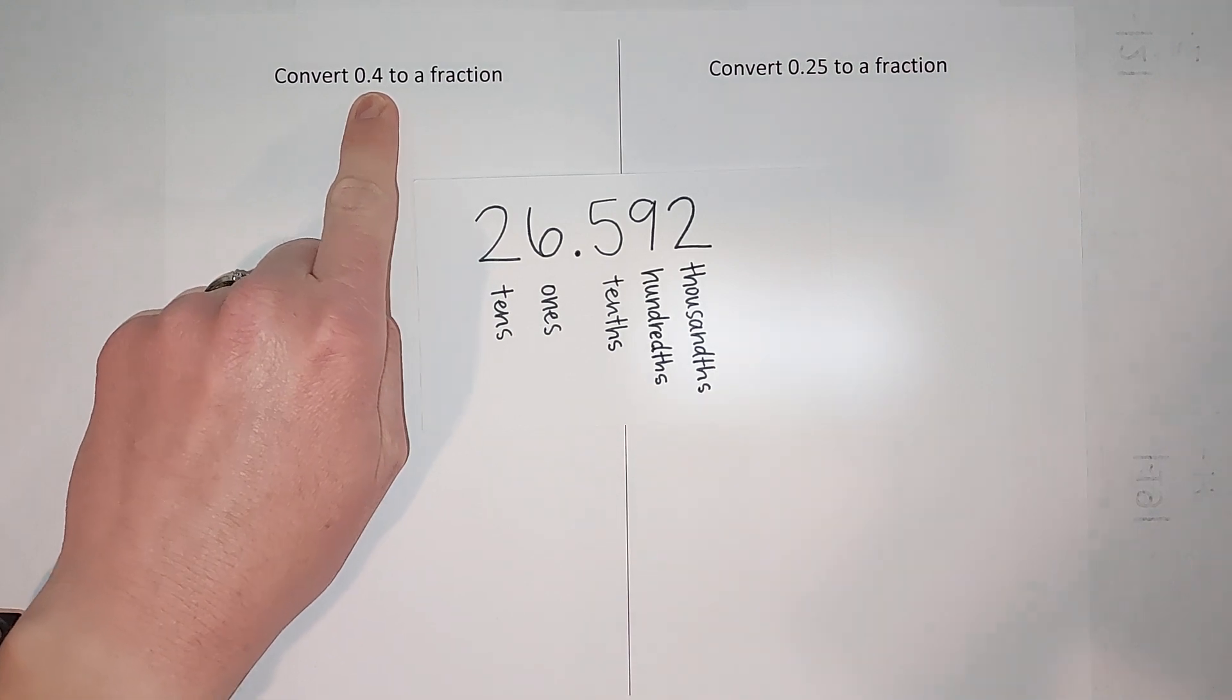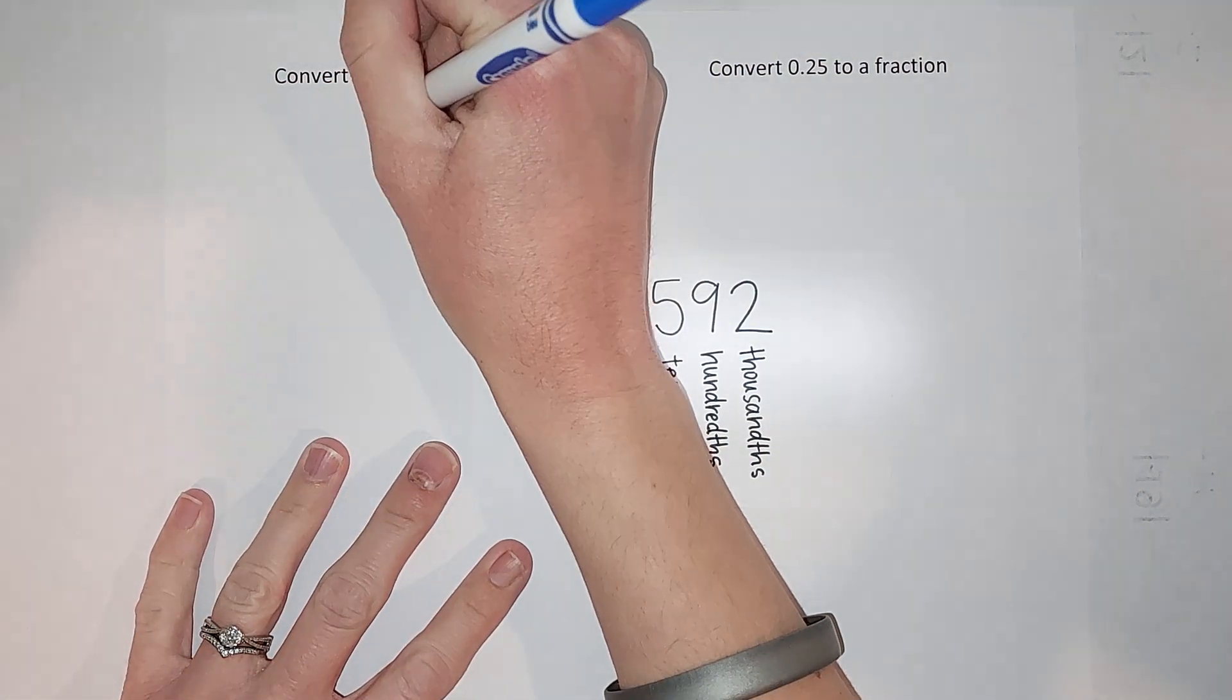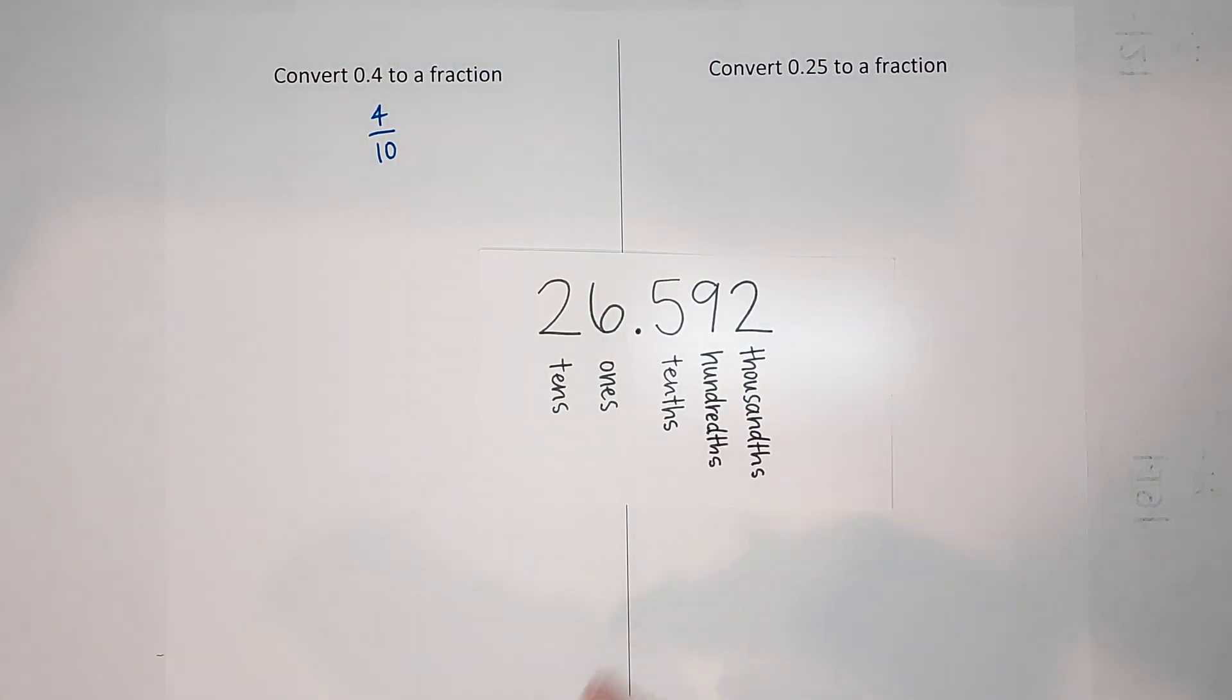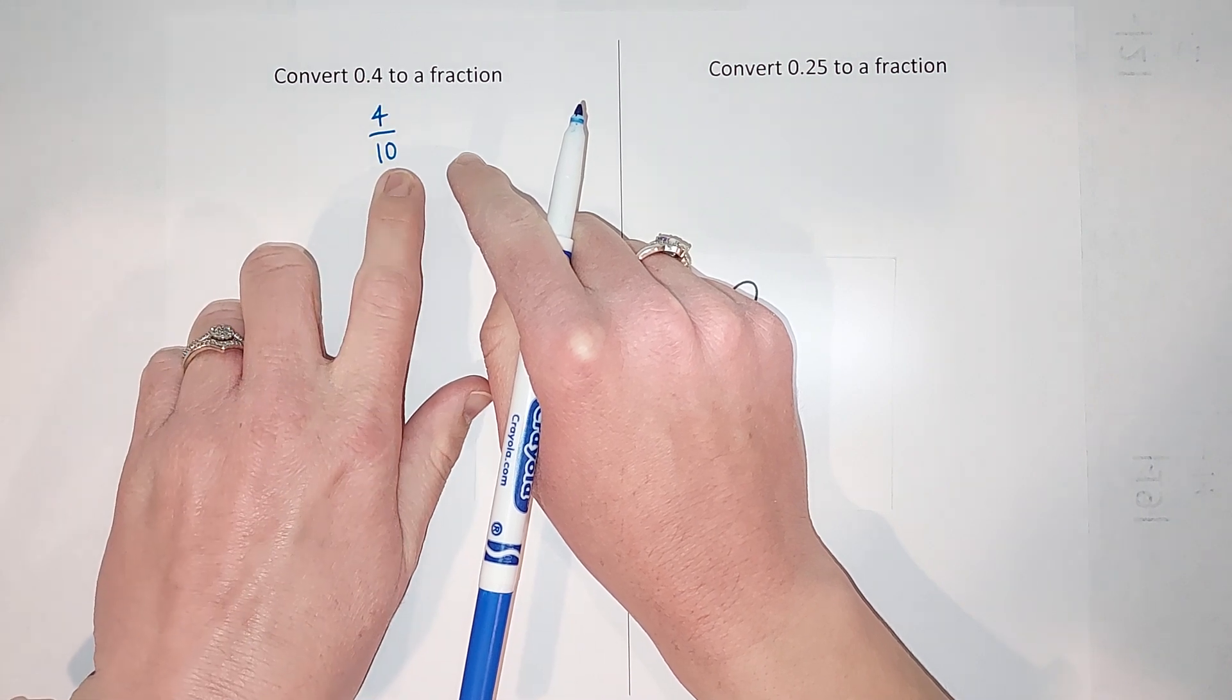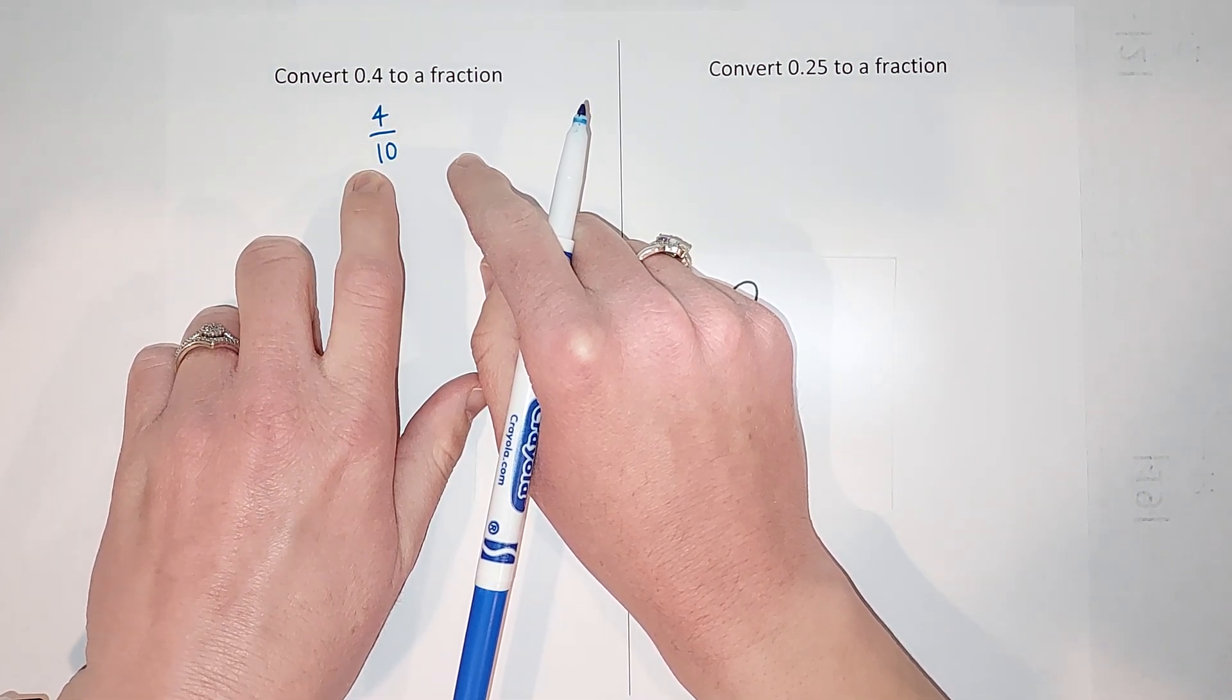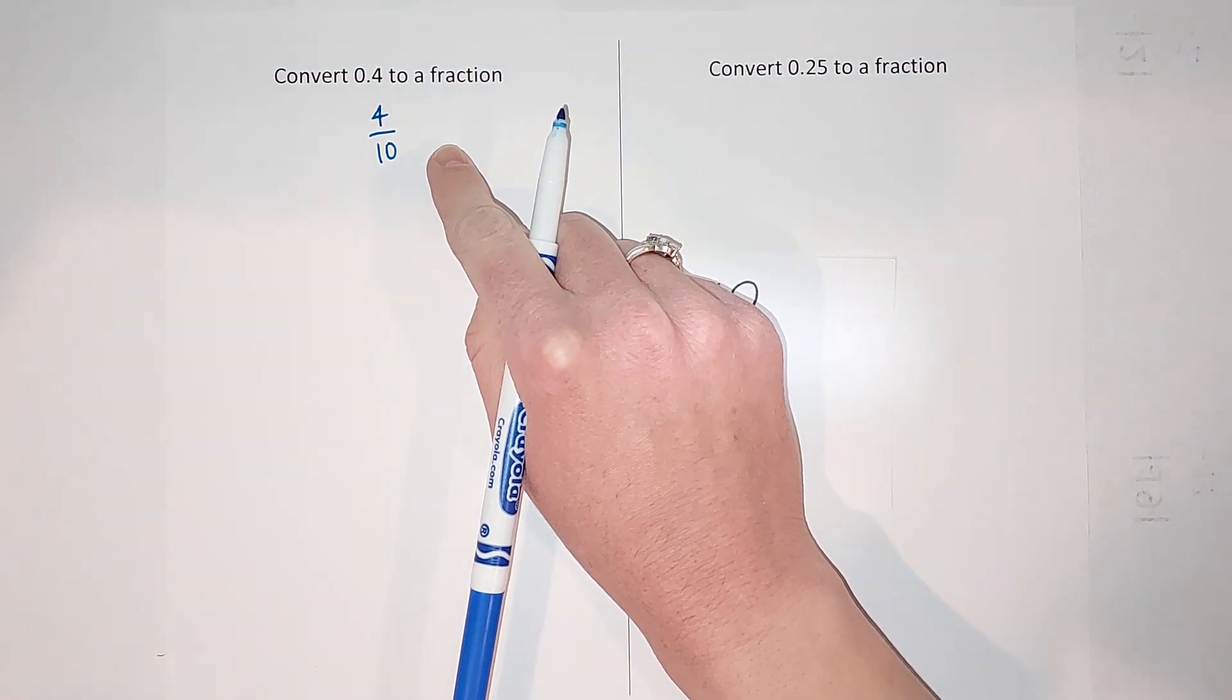four tenths, and that's the fraction four tenths. But it can be simplified. Another way to think of it too is I just think how many numbers are behind the decimal point, that's how many zeros in my denominator, and then it's gonna have a one. So now you just make sure it's simplified all